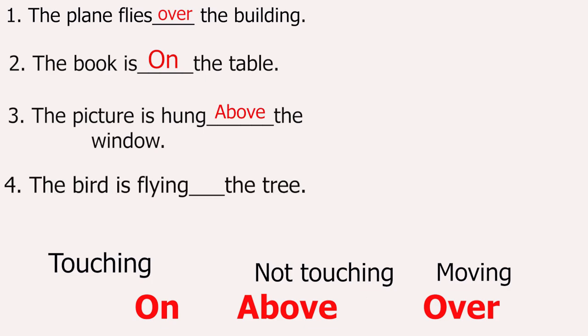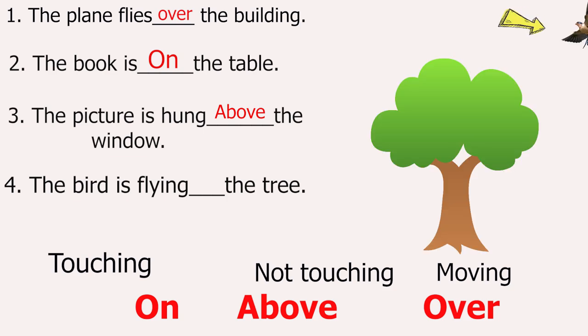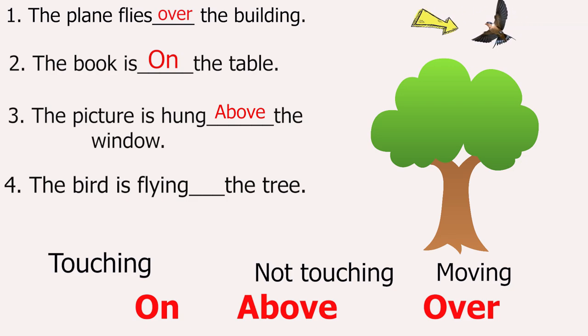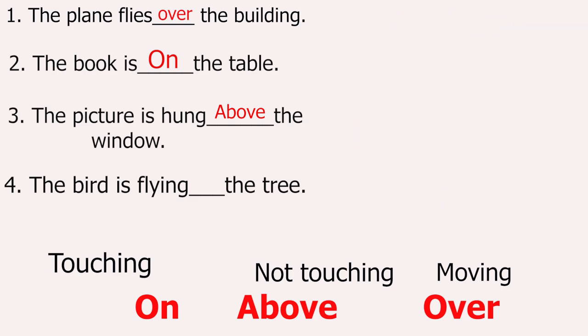You do this one. The bird is flying ___ the tree. Flying means moving. Write the answer in the comment box. And thanks for watching.